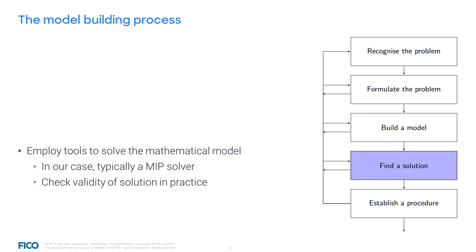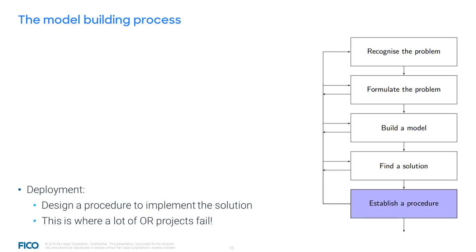Improvise. Adapt. Overcome. Finally, there is the deployment stage, where we have to design a procedure to implement the solution into practice. This is where a lot of OR projects fail. We can build a model and find a solution with a MIP solver, yet this is only a proof of concept at best. Once we have the solution, the question is: how do you put this into operation? How can a solution vector operate a traffic network? How resilient is our model to failure? There are specific deployment tools which build the bridge between the modeling expert and the practitioner. Deployment is one of — if not the — most important steps to make mathematical optimization successful in practice.